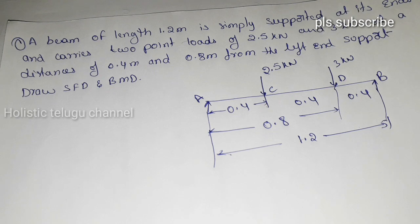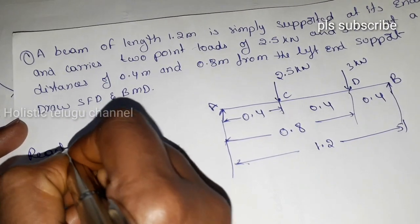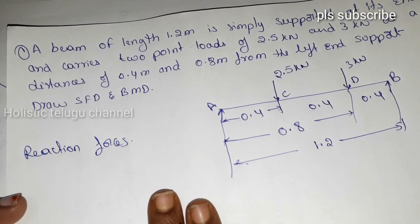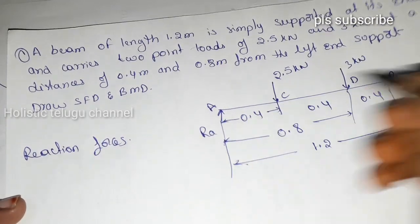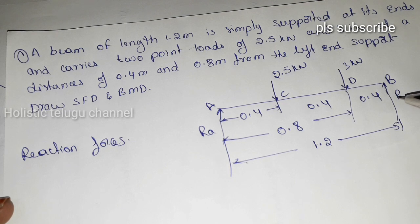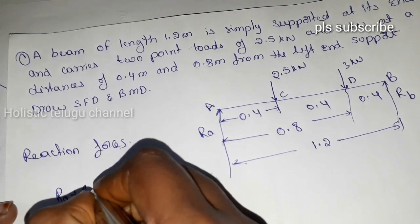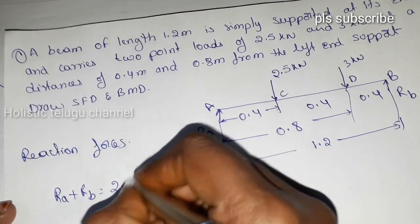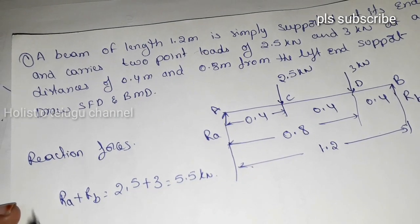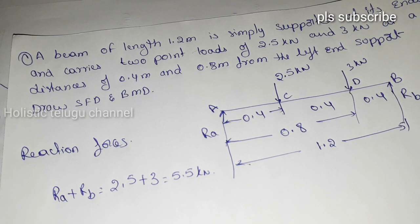First, we find the reaction forces Ra and Rb. Sum of vertical forces: Ra plus Rb equals the sum of downward forces, which is 2.5 plus 3, equal to 5.5 kN.